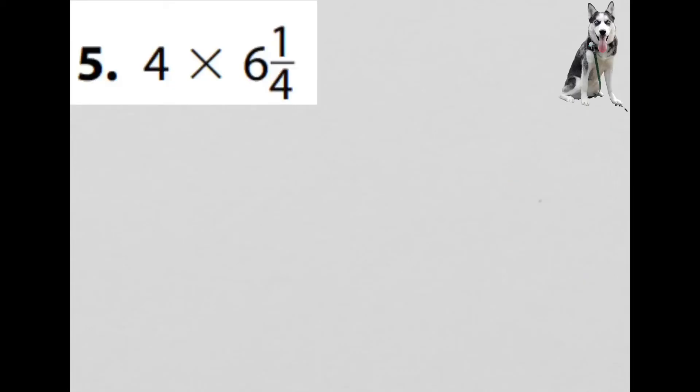Let's look at another example. I have the whole number 4 here. To make a whole number in a fraction, I simply put 1 as the denominator. So I have 4 over 1 times 6 and 1 fourth. I have to do some work with this 6 and 1 fourth. So I do 4 times 6, which is 24, and then I add 1, which is 25. So I have 25 over 4 as my fraction, and that's going to be multiplied by 4 over 1.